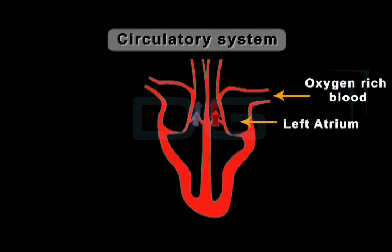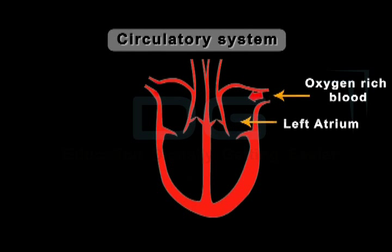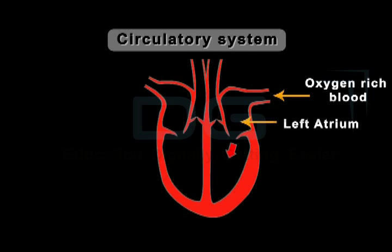The left atrium relaxes when this blood is drawn into the heart. Then the left atrium contracts, and simultaneously the left ventricle relaxes. This pushes the blood into the left ventricle through the one-way valve.